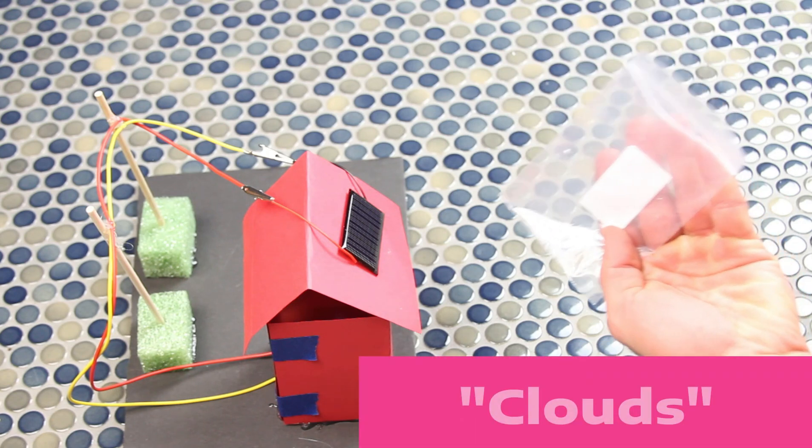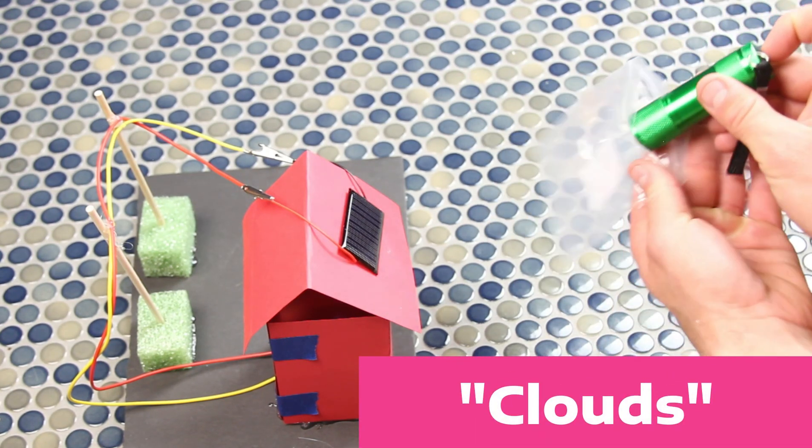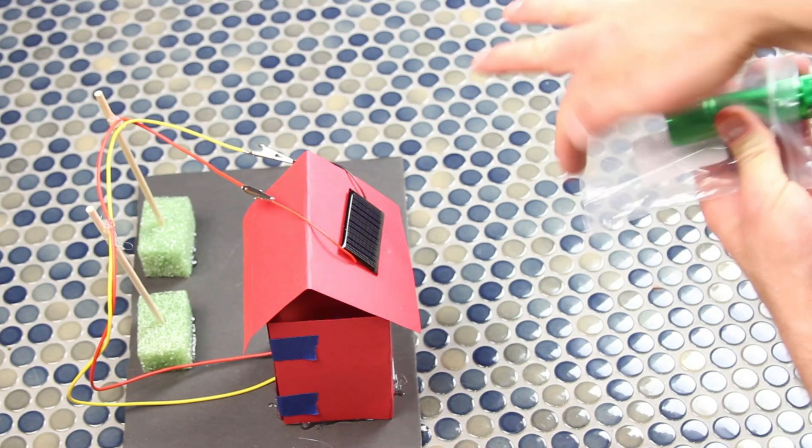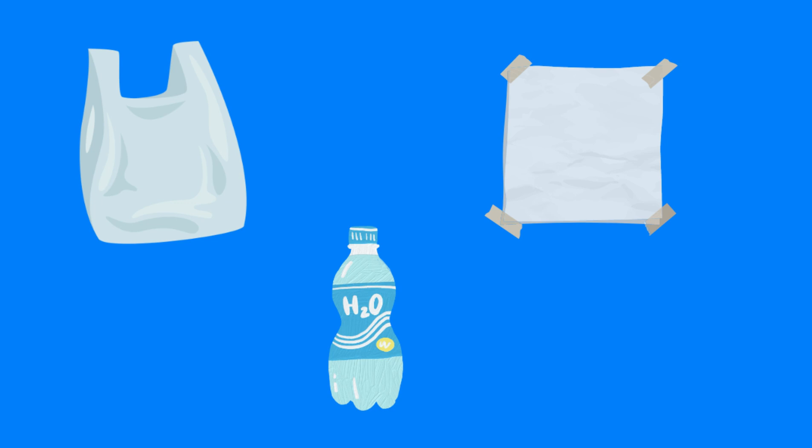What's another variable that affects solar panels in real life? Well, what if clouds or a foggy day comes along? See if you can find a material that dims the light of the flashlight a little bit, and see how it affects the output intensity of the LED.